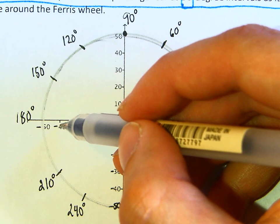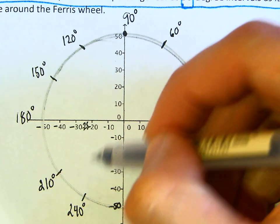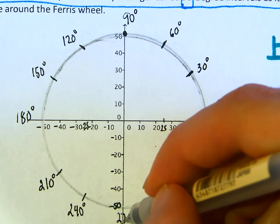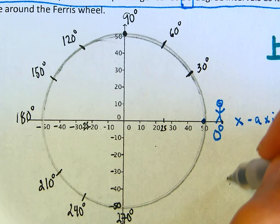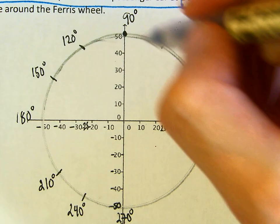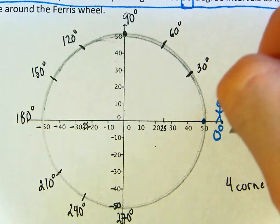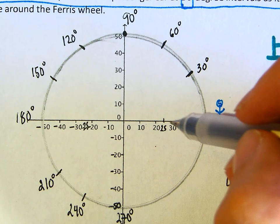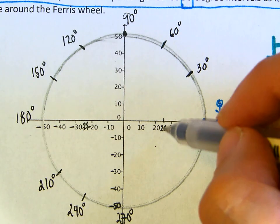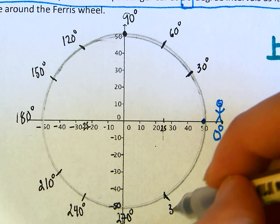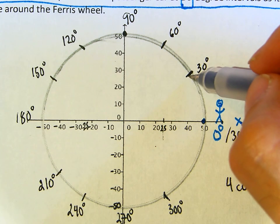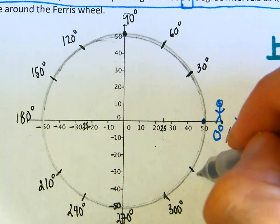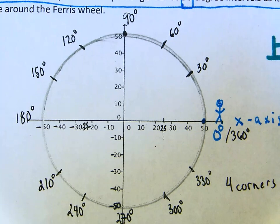For 210, I went to negative 40 and went down. For 240, I went to negative 25 and went down. Then 270. Remember the four corners from yesterday — 0, 90, 180, 270 — and then 360. After 270 we have 300, then 330. Great, so far so good. This is you on the Ferris wheel.